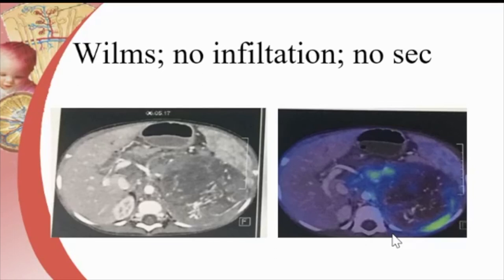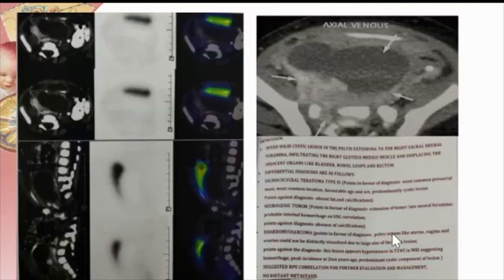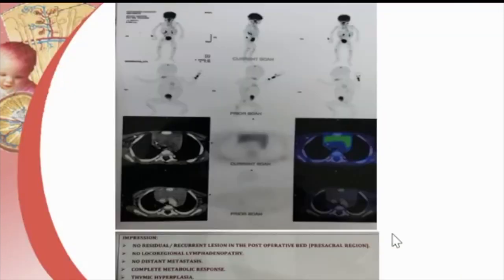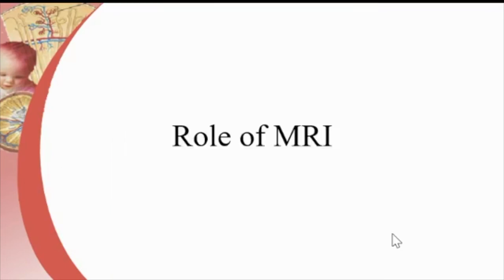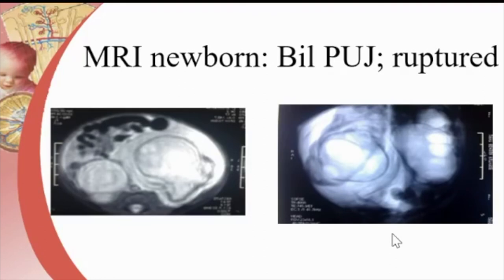In Wilms tumor, CT can clearly show no infiltration, no midline crossing, and no vascular involvement. PET-CT is particularly useful in tumor conditions: in a pelvic rhabdomyosarcoma, post-operative PET-CT clearly showed no residual lesion and no uptake elsewhere — confirming complete excision.